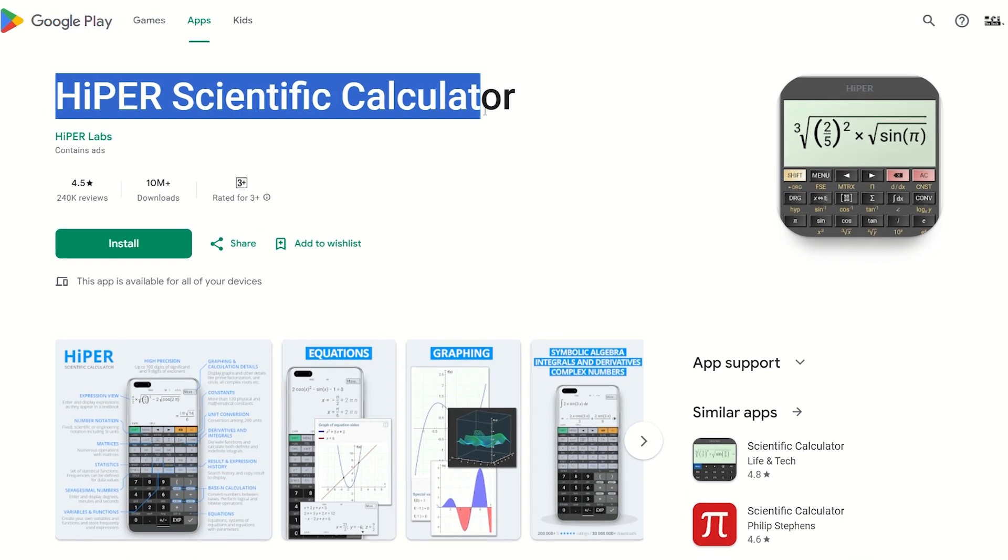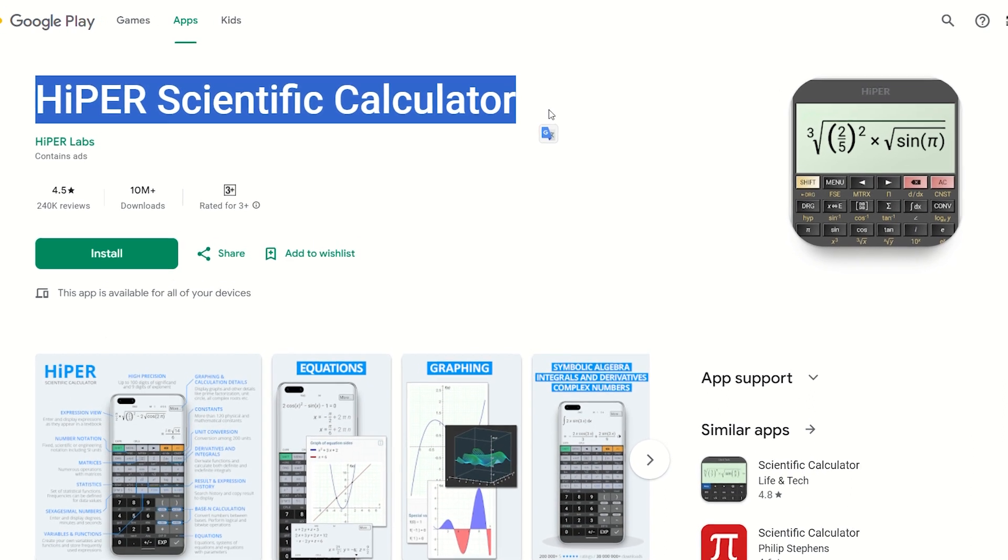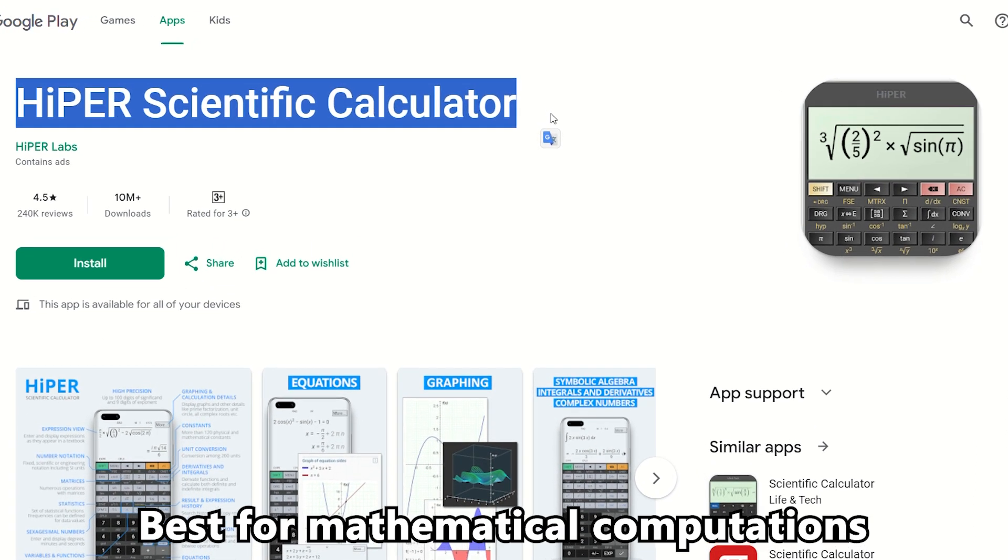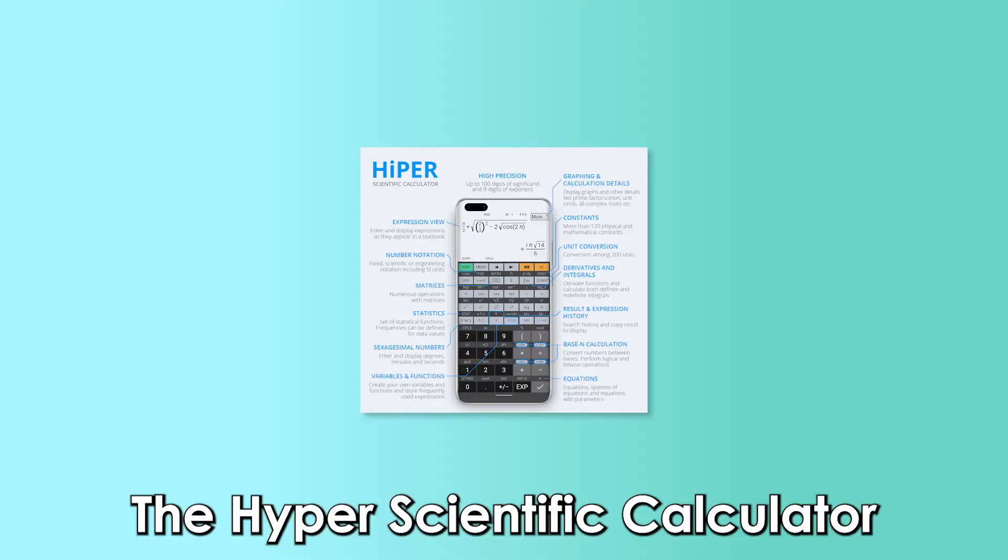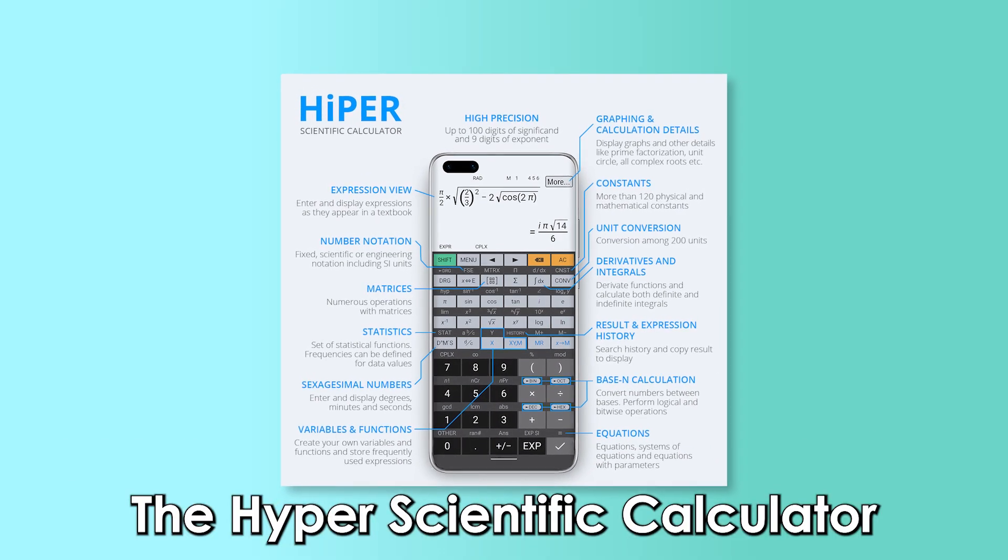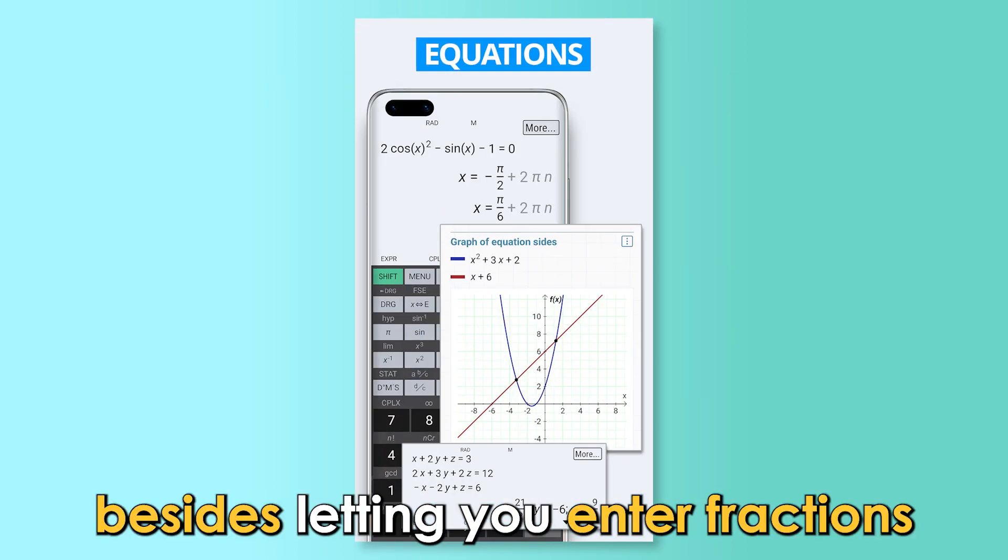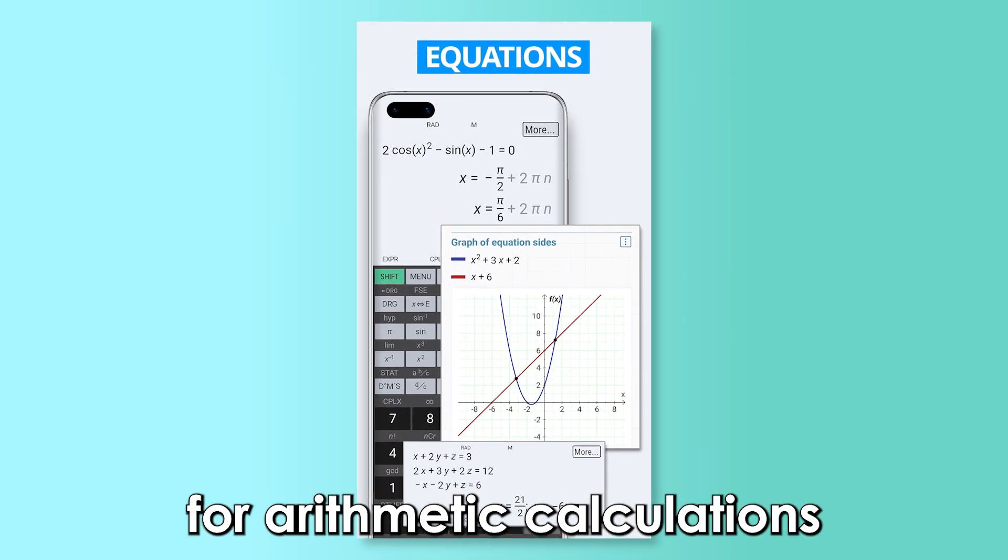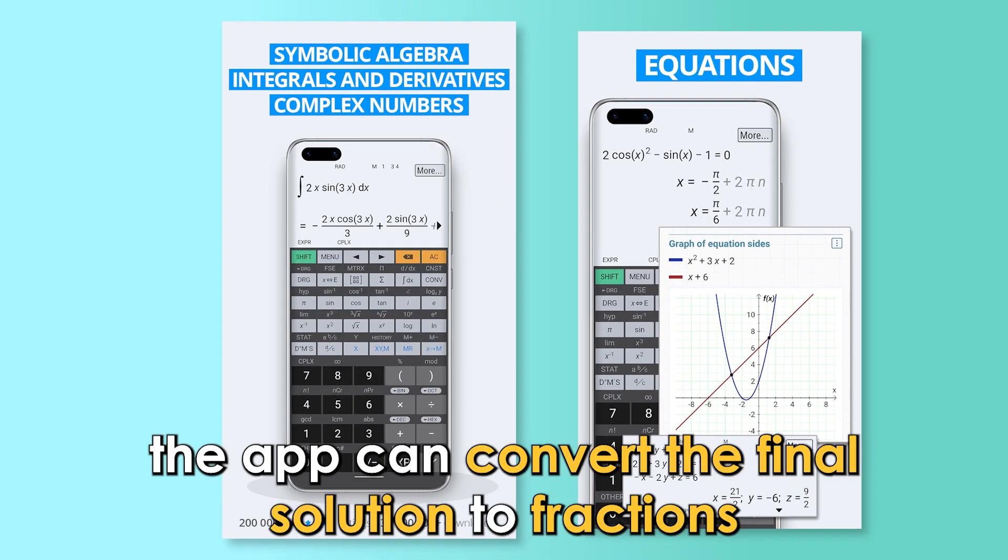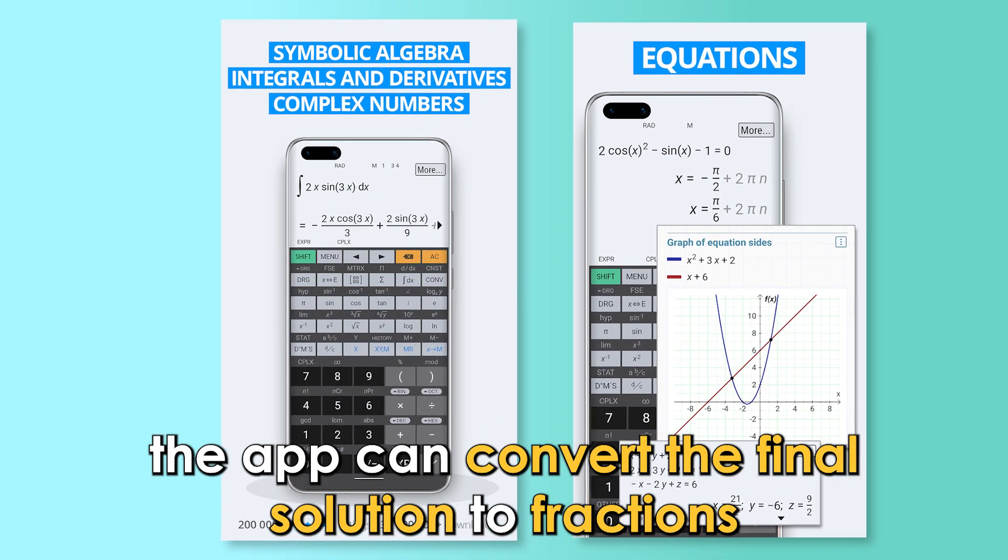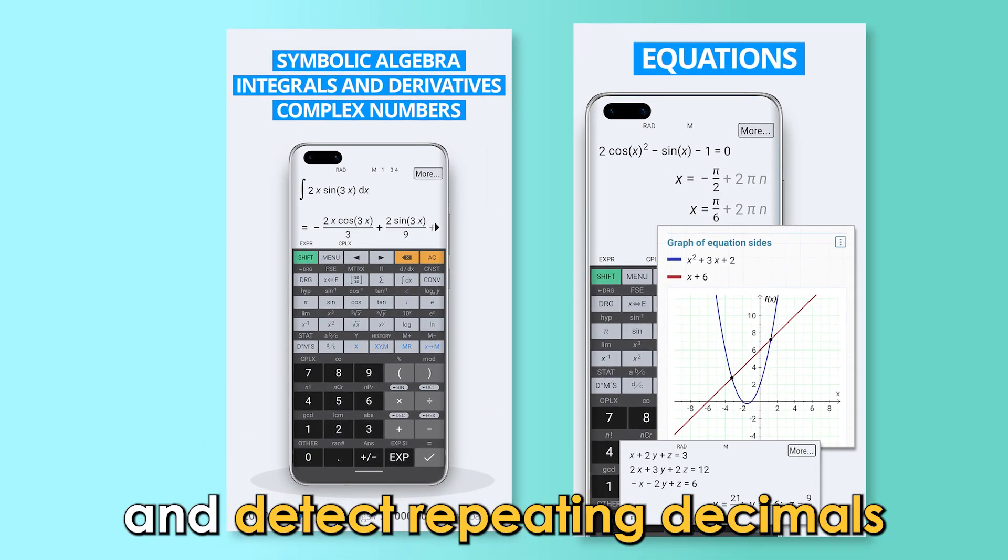Let's get started with Hyper Scientific Calculator App, Best for Mathematical Computations. The Hyper Scientific Calculator App is a widely known mathematical tool to ease computations. Besides letting you enter fractions for arithmetic calculations, the app can convert the final solution to fractions and detect repeating decimals.